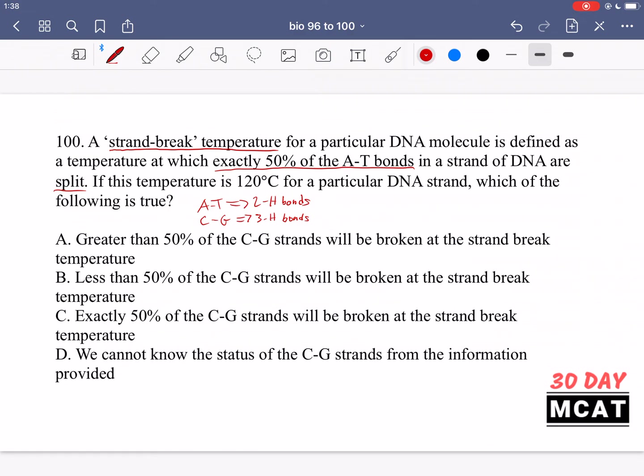If they were the same number of hydrogen bonds then we can say okay it's likely that we have the same number of GC bonds broken. If there were fewer then we have more GC bonds broken. But in this case we're going to say that since there are more bonds holding G and C together than A and T at this given temperature more of the GC are still intact. So A is saying greater than 50% of CG strands will be broken. No, we're going to say fewer than 50% and B is correct, less than or fewer than 50% of the CG strands will be broken at this strand break temperature.